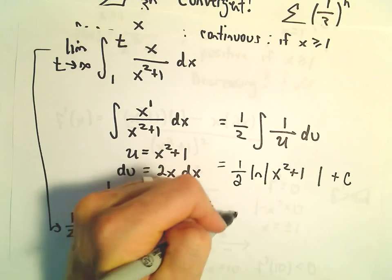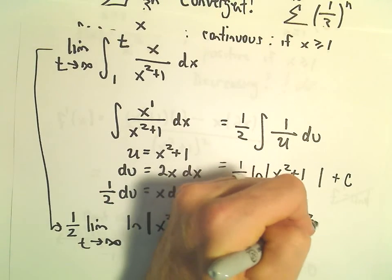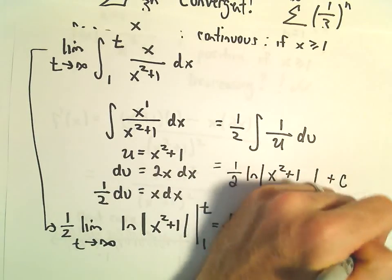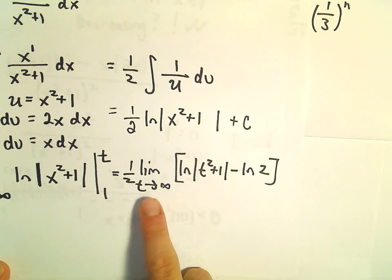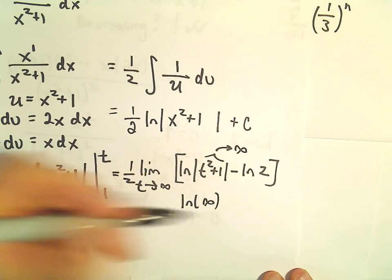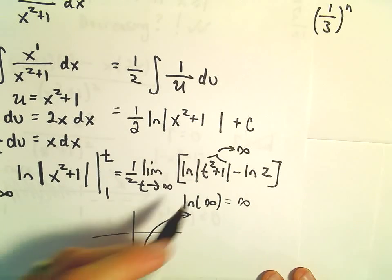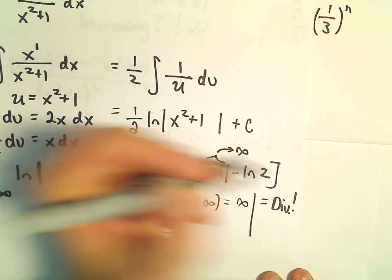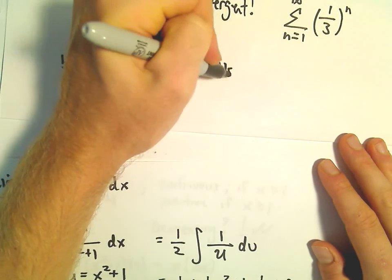So now if we plug in our limits, we'll have the natural logarithm of t squared plus 1 minus the natural logarithm of 2. Well, the only thing I'm really interested in is what happens with this limit. Is it convergent or divergent? But as t goes to infinity, t squared plus 1 is certainly going to go off to infinity. And then you've got the natural logarithm of a really big number. Well, this does equal a really big number if you remember the graph of ln of x. So in this case, this is going to be a divergent improper integral. So since the improper integral diverges, likewise we can go back and say that our original series is also divergent.